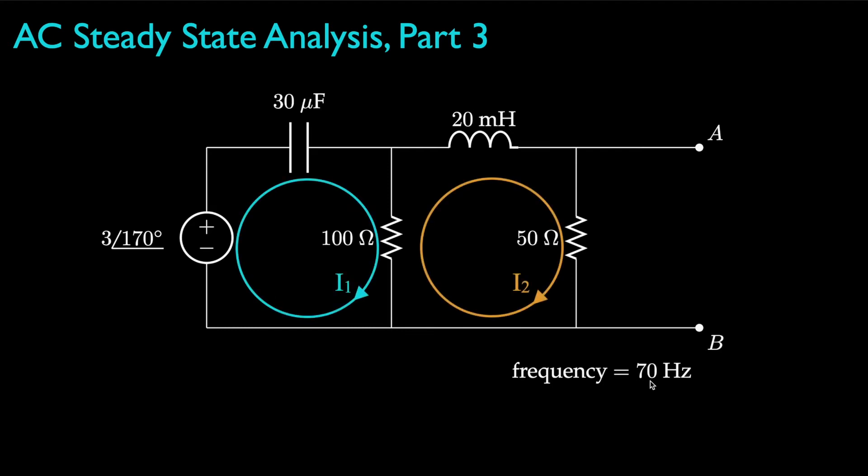We can use any of the techniques we've learned for DC circuits, but for this one, let's use the mesh or loop current method with the two mesh currents shown here. Now using the values for all the circuit elements and the frequency of 70 hertz, we can associate each element with an impedance.